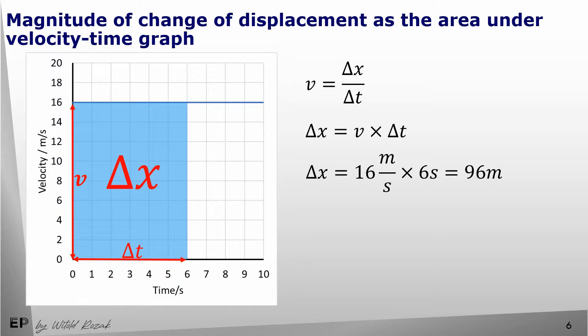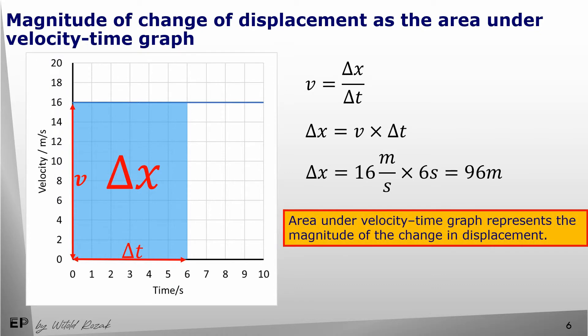In this case it is 60 meters per second times 6 seconds, which is 96 meters. We can extend this example to all velocity-time graphs. For all velocity-time graphs, the area between the line and the time axis is equal to the magnitude of the change of displacement that happened in a given time period.